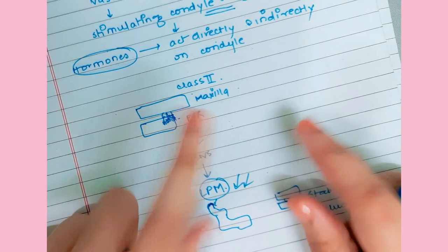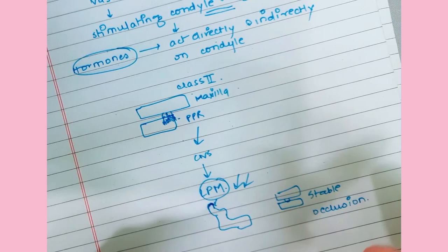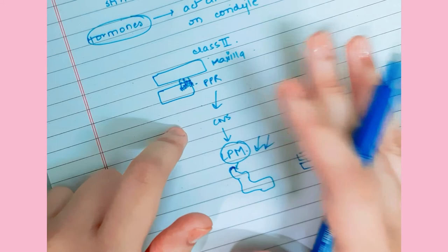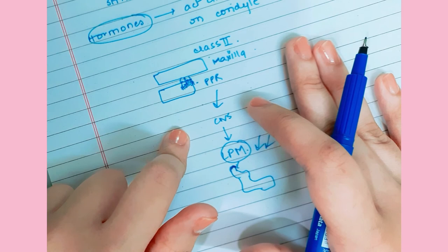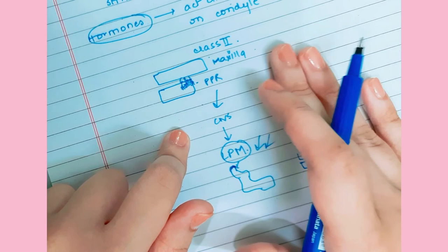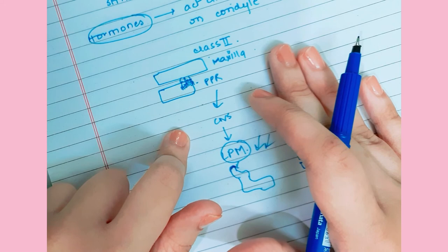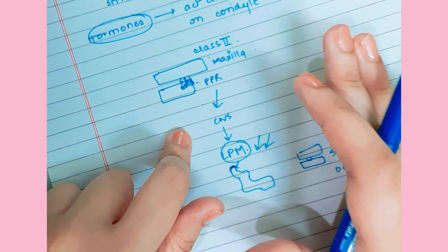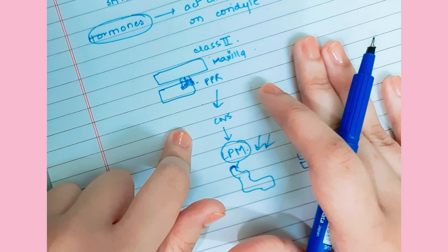Unlike removable appliances with springs that control individual tooth movement, myofunctional appliances are given for skeletal abnormalities — not for individual tooth movement. They are given mostly before the growth spurt ceases, because after that, growth of the maxilla and mandible will no longer occur. This is why understanding the growth spurt and its application is important. That covers Petrovic's Hypothesis and the Servo System Theory.